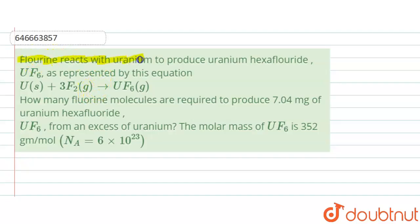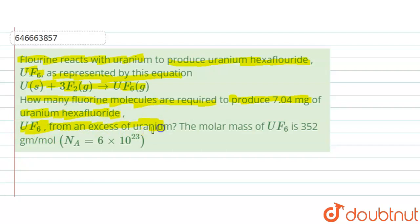Fluorine reacts with uranium to produce uranium hexafluoride, UF₆, as represented by this equation. How many fluorine molecules are required to produce 7.04 milligrams of UF₆ from an excess of uranium? The molar mass of UF₆ is given as 352 grams per mole, and Avogadro's number is 6×10²³.